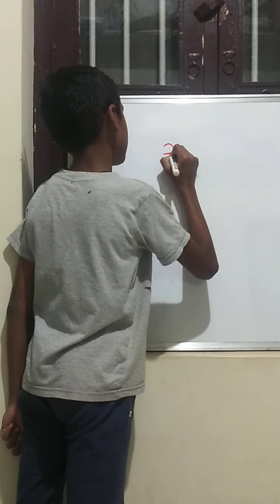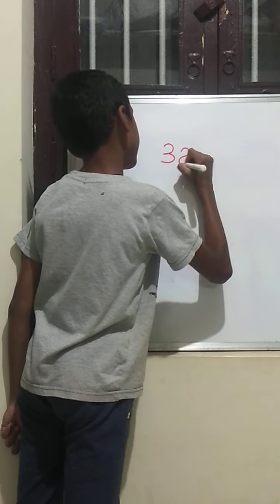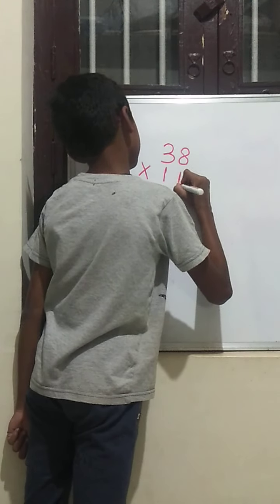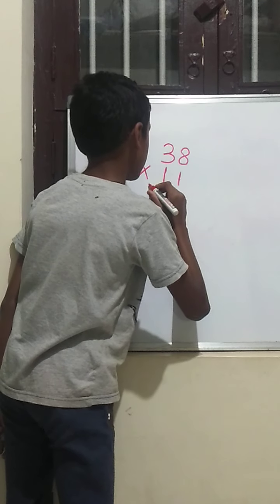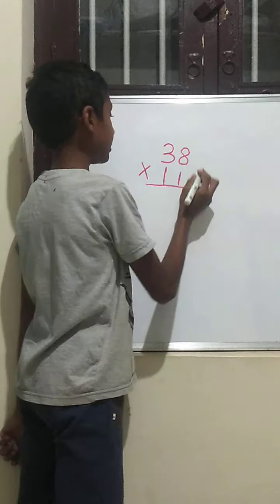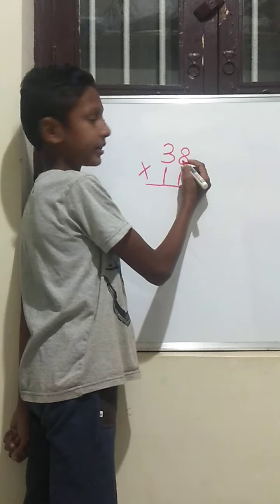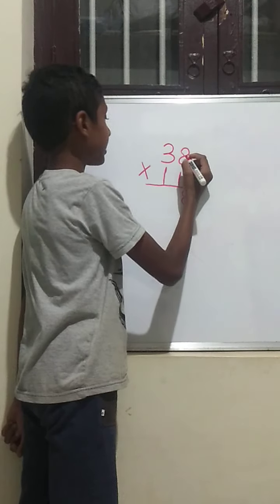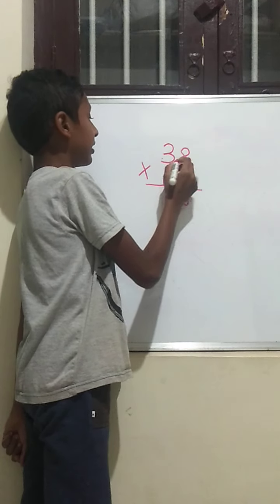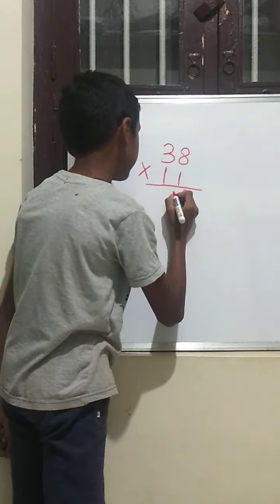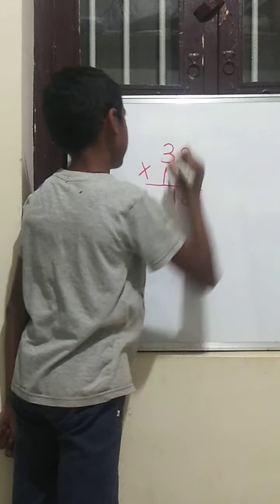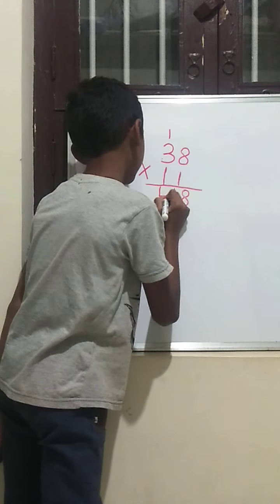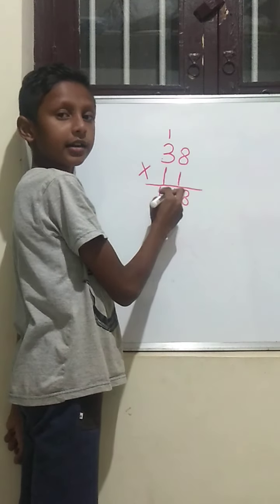38 multiplied by 11. First, we should write the first digit as it is. Next, we should add right side digit to the left side digit. 8 plus 3 is 11. Next, 1 plus 3 is 4. The answer is 418.